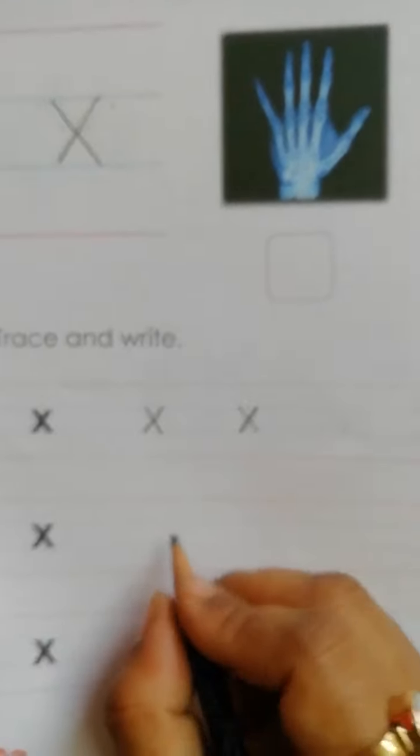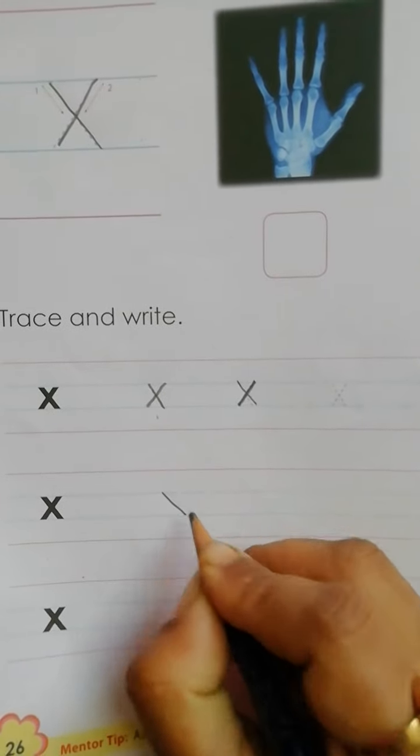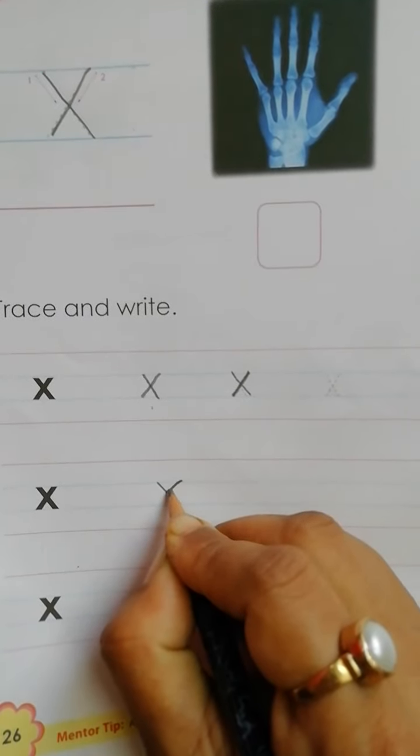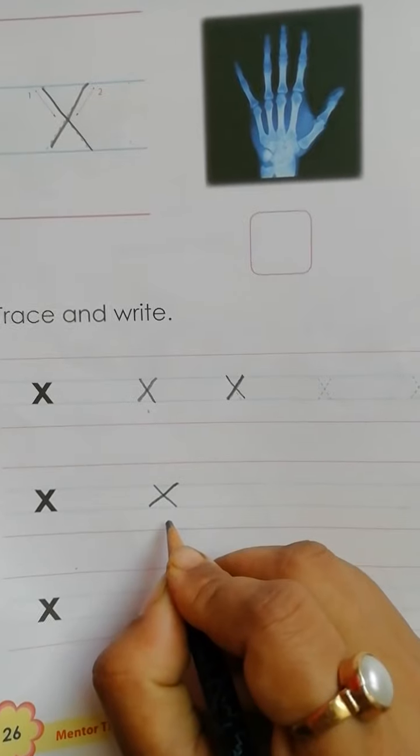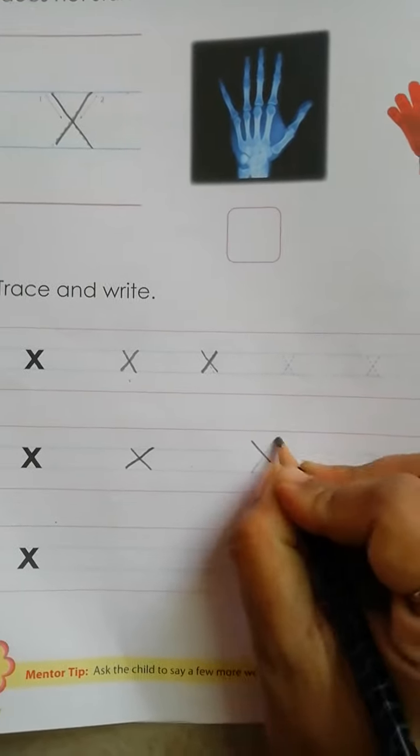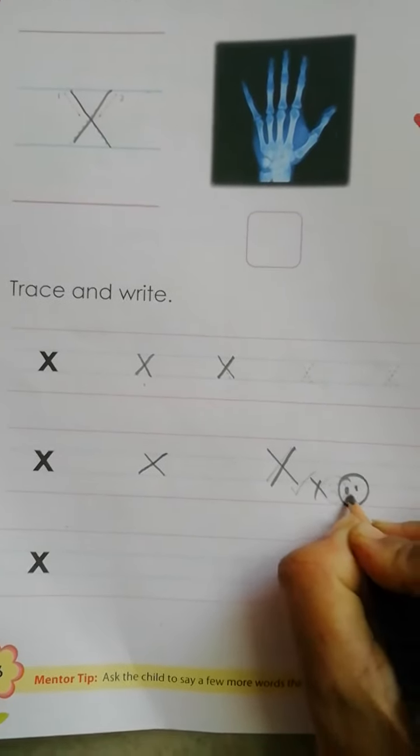Now, how to write between two blue lines. One slant, again one slant, look like cross. This is small letter x. If you have to write like this, I give you cross and bad face.